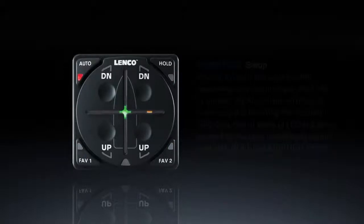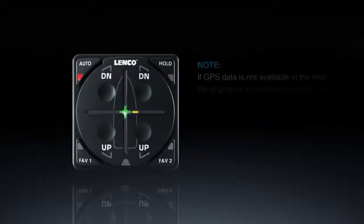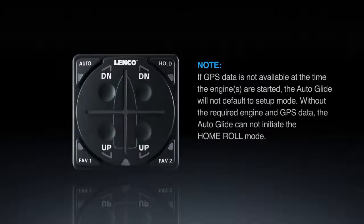Please note: if GPS data is not available at the time the engines are started, the auto glide will not default to setup mode. Without the required engine and GPS data, the auto glide cannot initiate home roll calibration mode.